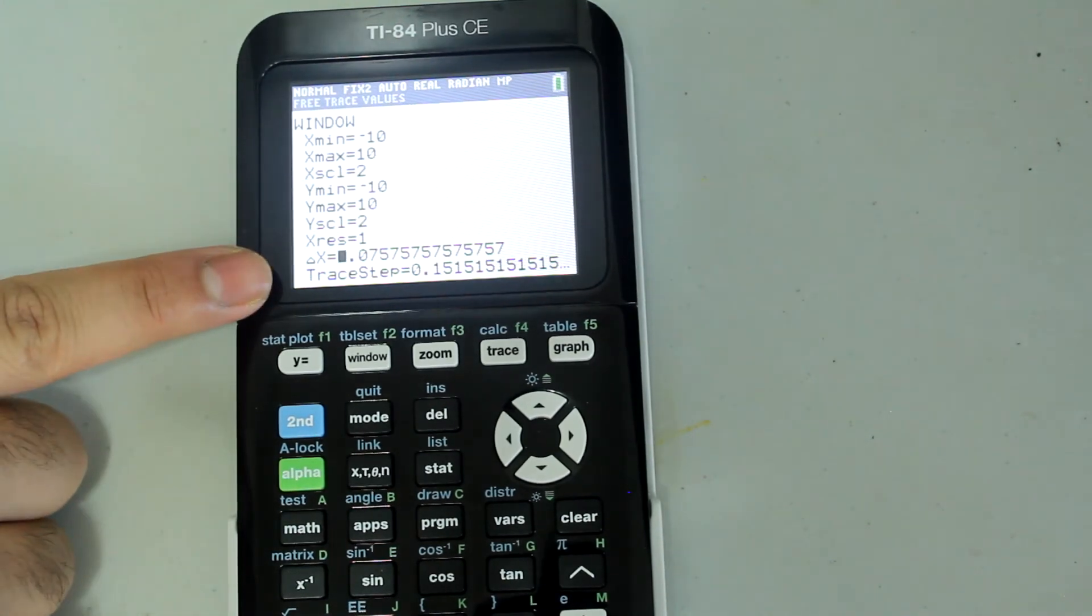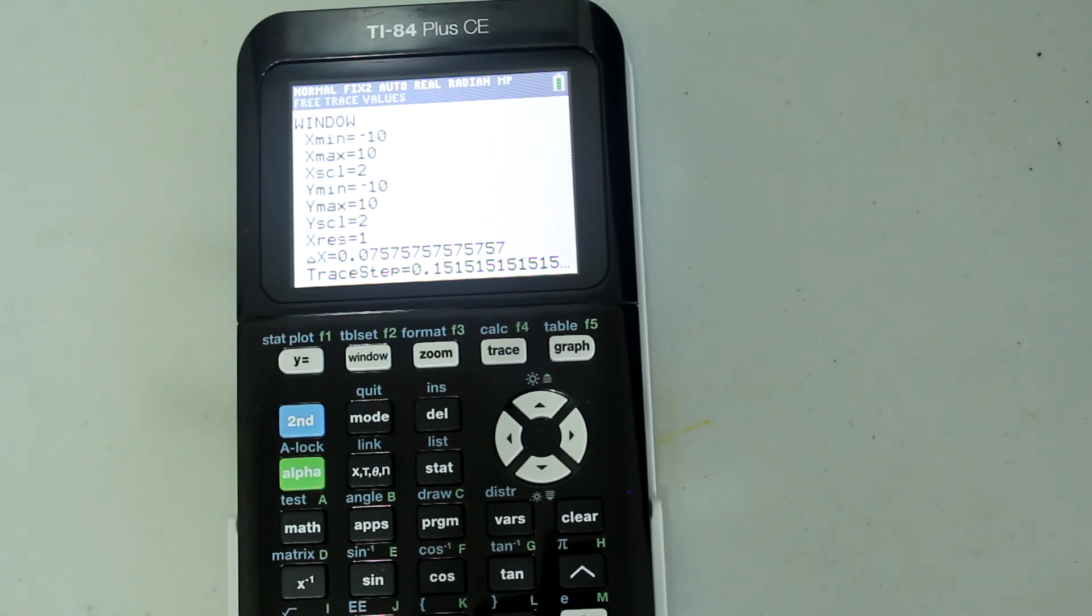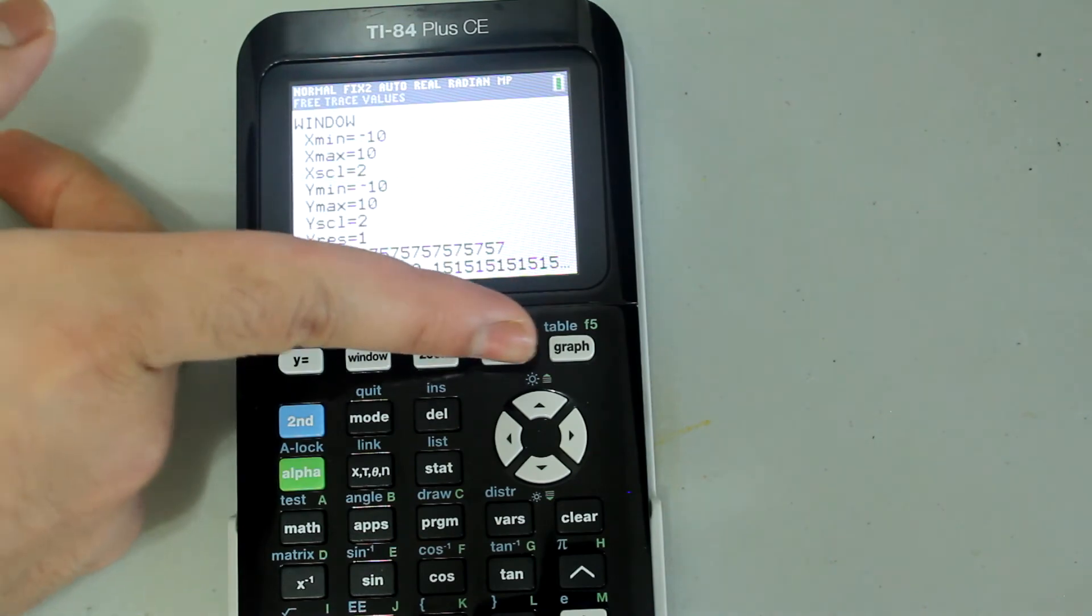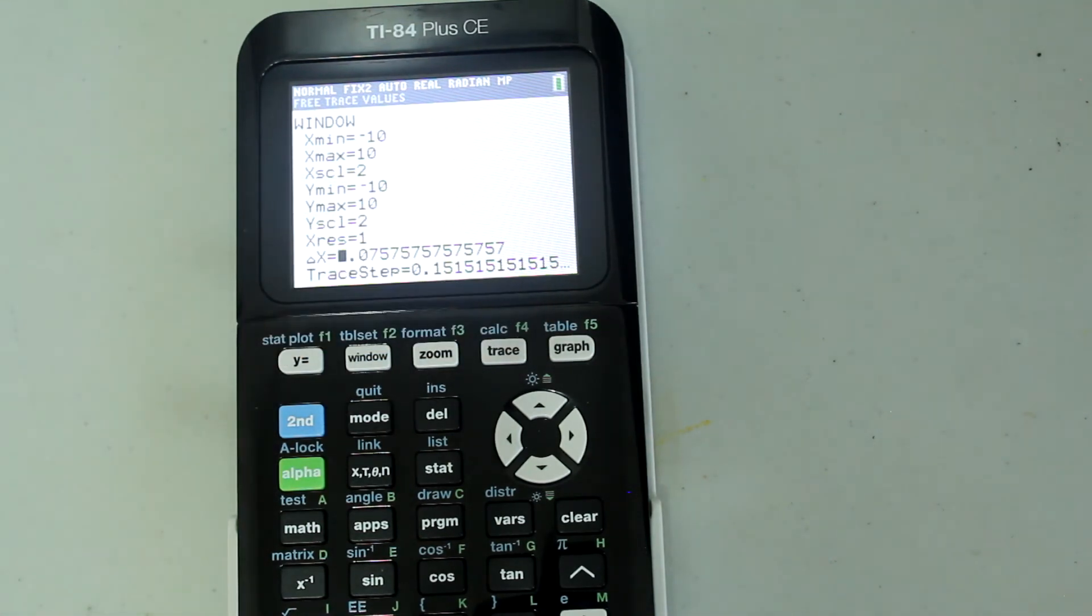Finally, is the trace step, which determines how far the cursor moves to the right or left when you use the trace step to trace values on the graph.